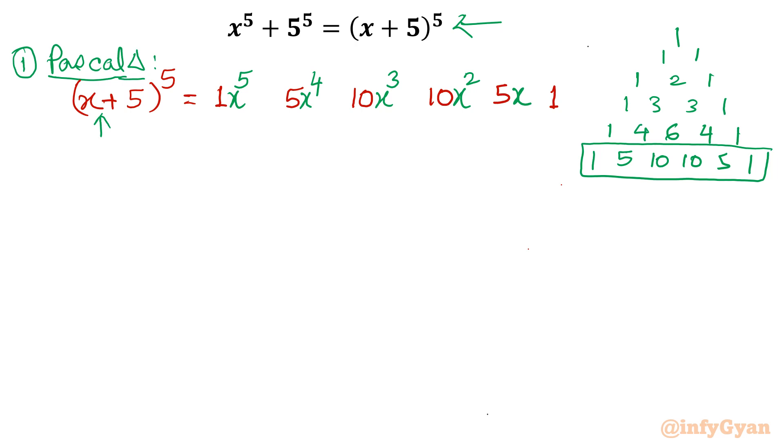At the same time, I will write the second term power in ascending order. So 5^0 is here, 5^1 is here, 5^2 is here, 5^3 is here, 5^4 is here, 5^5.